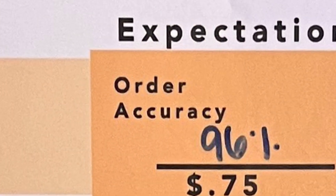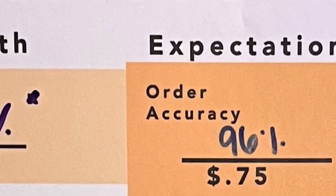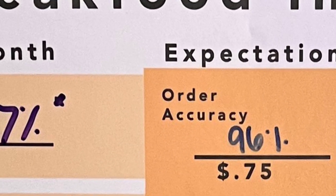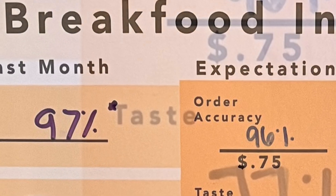Order accuracy. This starts with the ordering process, which goes to the kitchen to be made correctly. Then it comes down to whether it is bagged correctly.